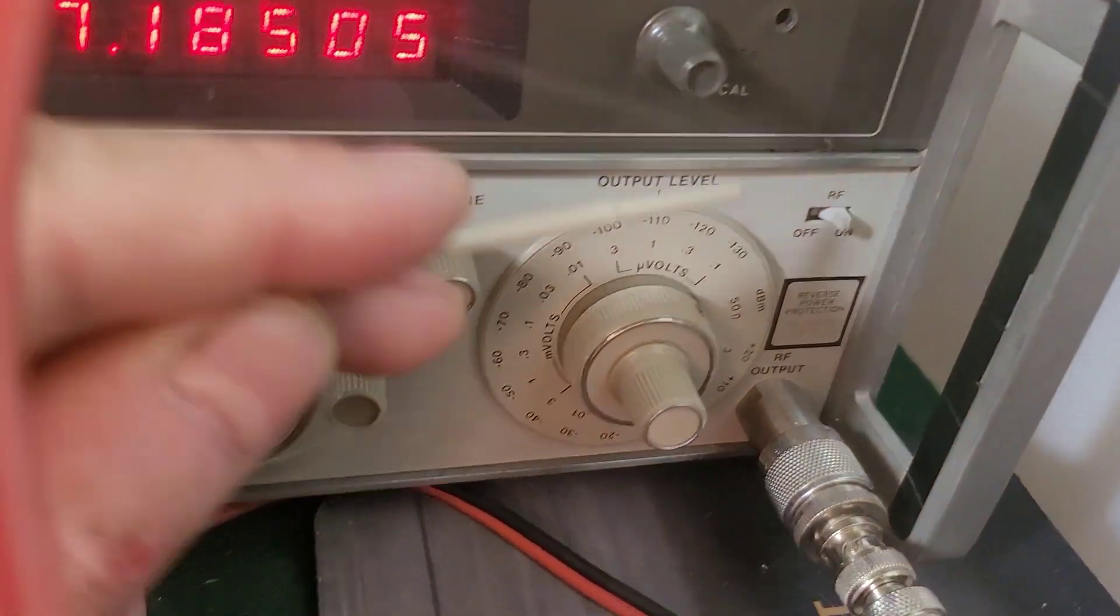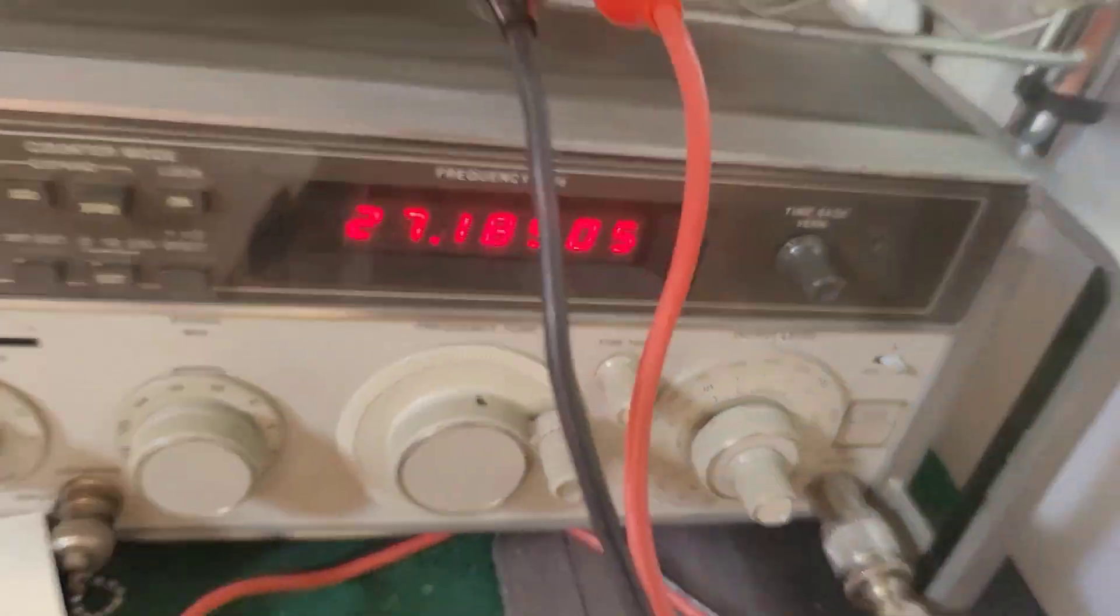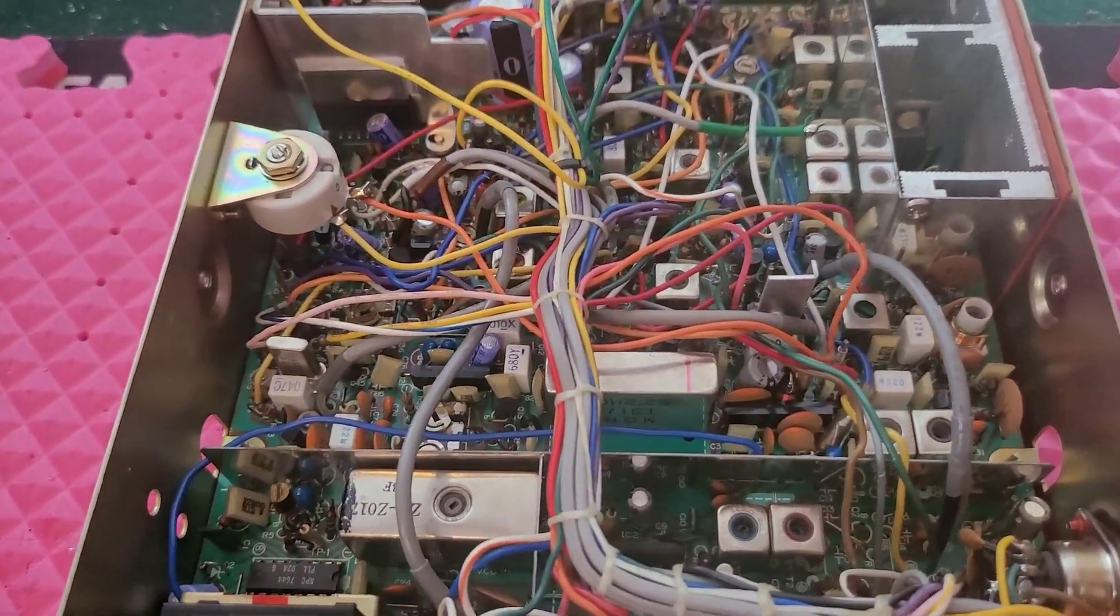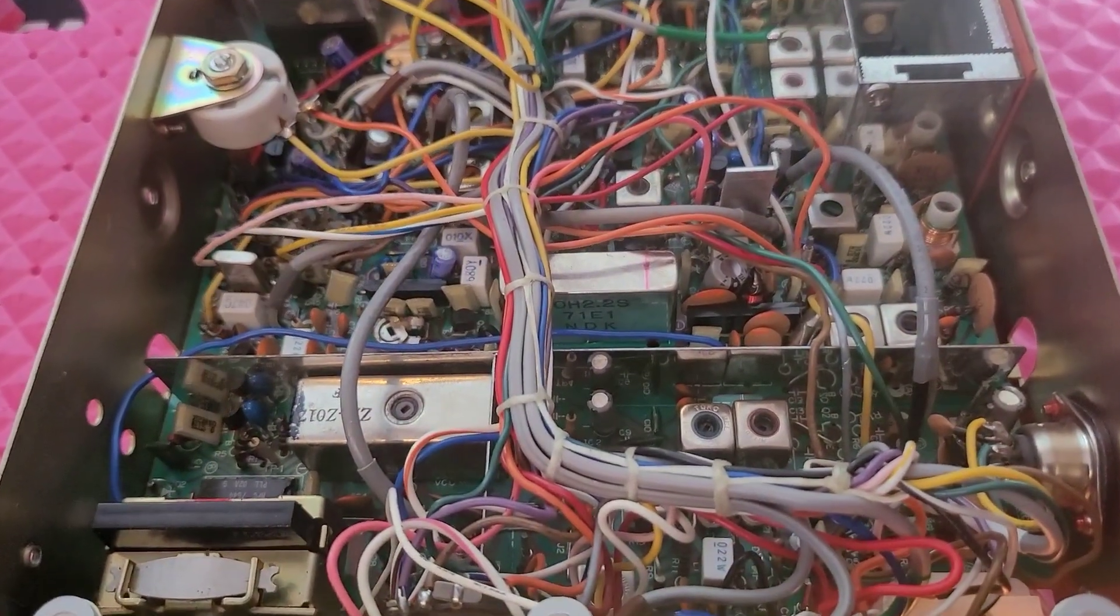If we can get 12 dB of SINAD out of minus 120 dBm, great. Or minus 130 dBm, even better. The lower the signal, the more sensitive your receiver is.